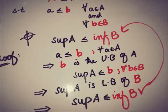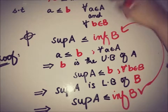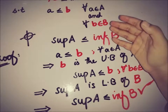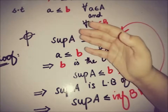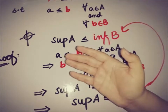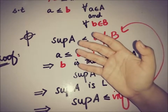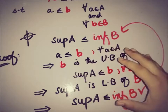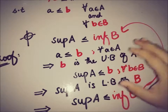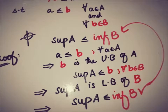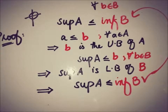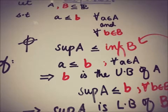Therefore, we can write sup(A) ≤ inf(B), which is exactly what we wanted to prove. We have shown that if every element of A is less than every element of B, then sup(A) ≤ inf(B). We can also visualize this on the number line to understand it more easily, and this holds for every subset of ℝ.